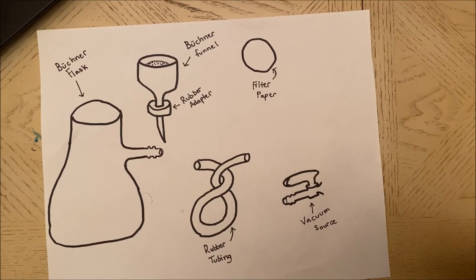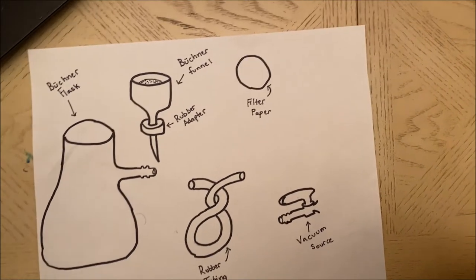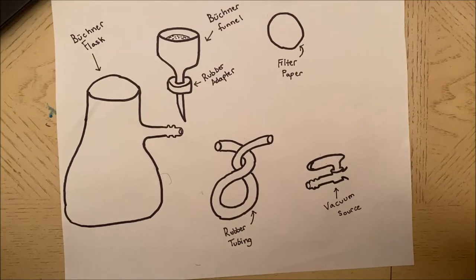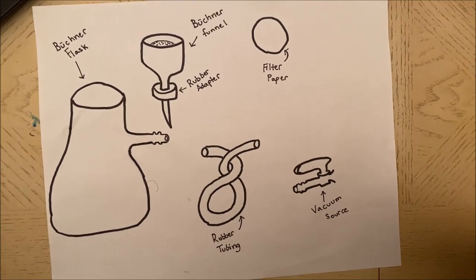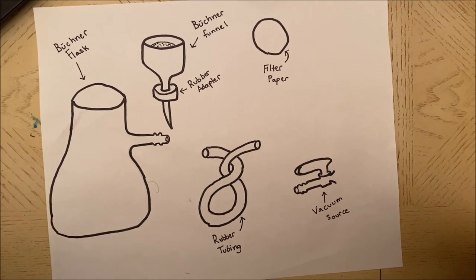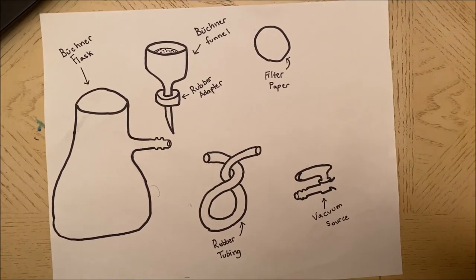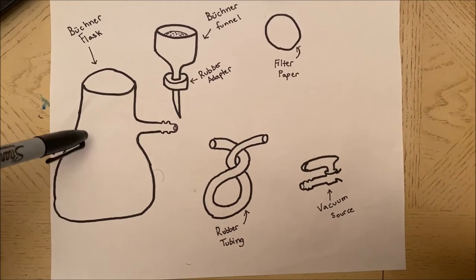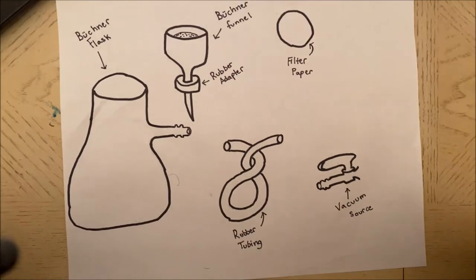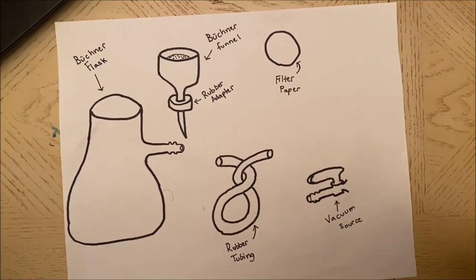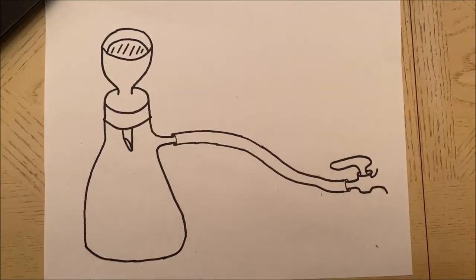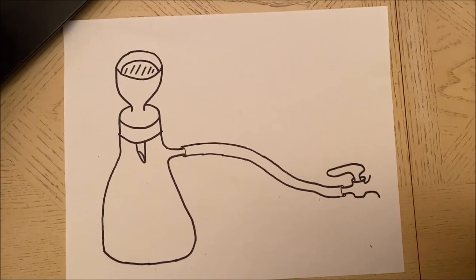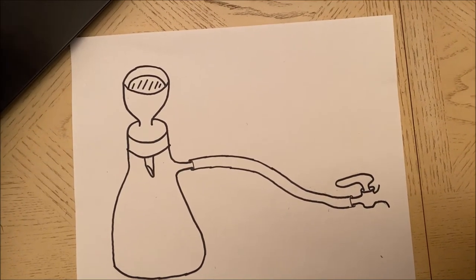Other things we need to make sure is that the vacuum is not strong enough to rip the filter paper, because at that point we will have to restart everything. In extreme cases we need to be careful because sometimes the flasks may break under the pressure, so we need to keep all of these in check when we are doing this.